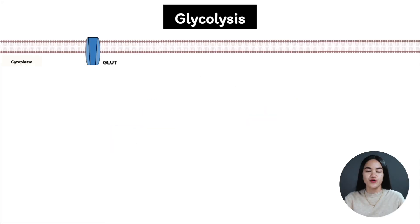In this video, we're going to cover glycolysis, the breakdown of one molecule of glucose to produce two molecules of pyruvate. We're going to break down the 10-step process and the energy yield of glucose oxidation.